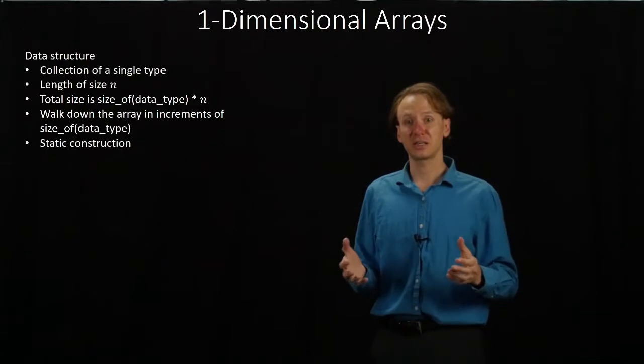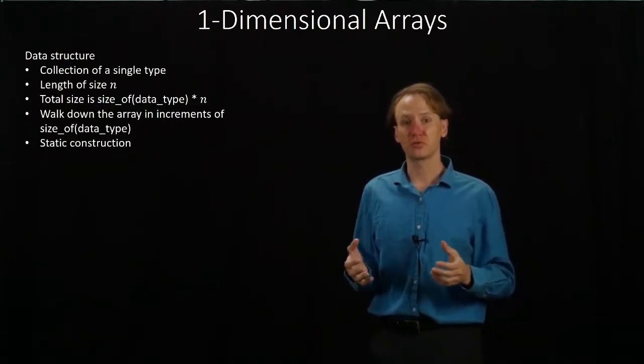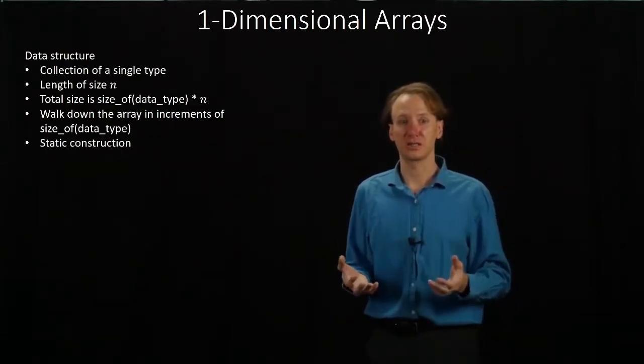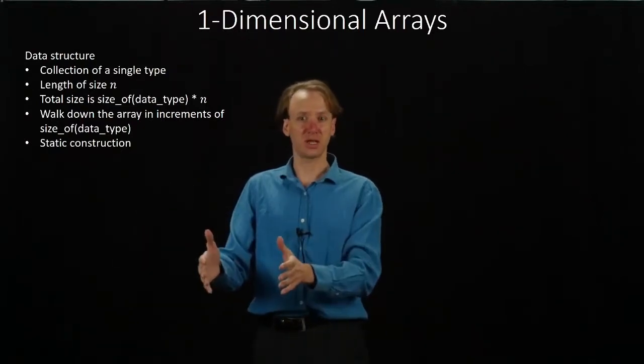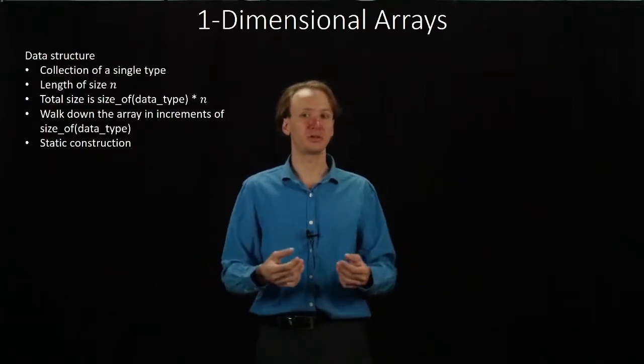We can also access successive elements in our array just by incrementing by the size of our data type. We saw something similar when we were looking at simple data structures, where if our first element was 4 bytes, then we'd skip over those 4 bytes to get to the second element in our data structure. If the second element in our data structure is also 4 bytes, then we'd just go down another 4 bytes to get to the third element in our data structure.